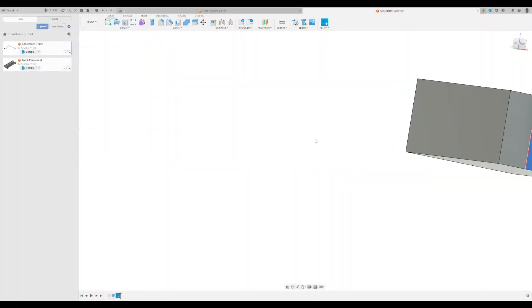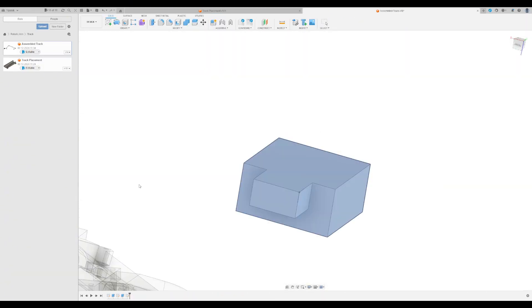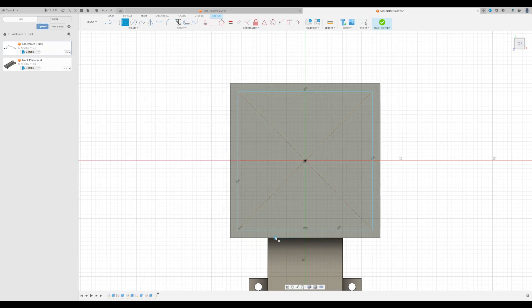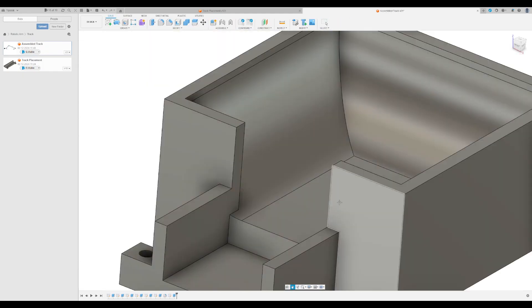I started off this week by designing the drop-off point for the robotic arm. This is the last step for the track system of the robotic arm and now I'm finally done with the track system.